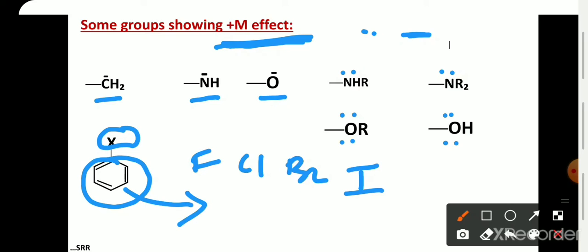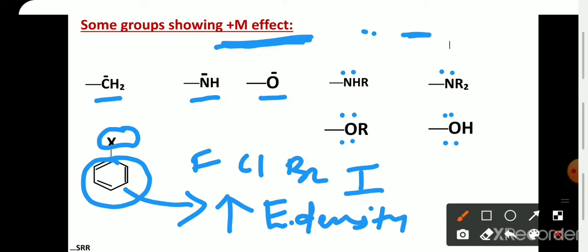All these groups increase the electron density on the conjugated system and therefore show plus M effect.